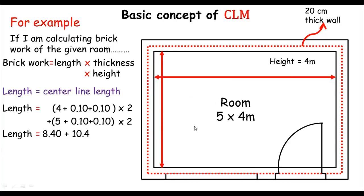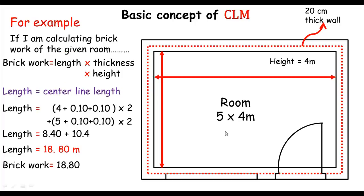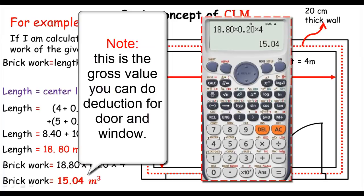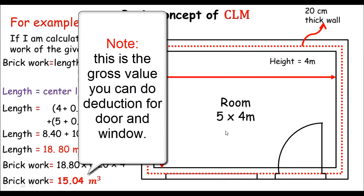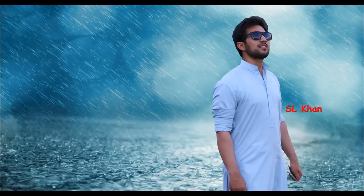Now if I put all these values into the formula, the total brickwork of the room is the length of 18.8 meters times the thickness of 0.20 meters times the height of 4 meters. So the total brickwork of the room is 15.04 cubic meters. That's the basic concept of the center line method. I hope you understand now. If you have any problem, let me know in the comment section. Thank you dears for watching. See you next time.